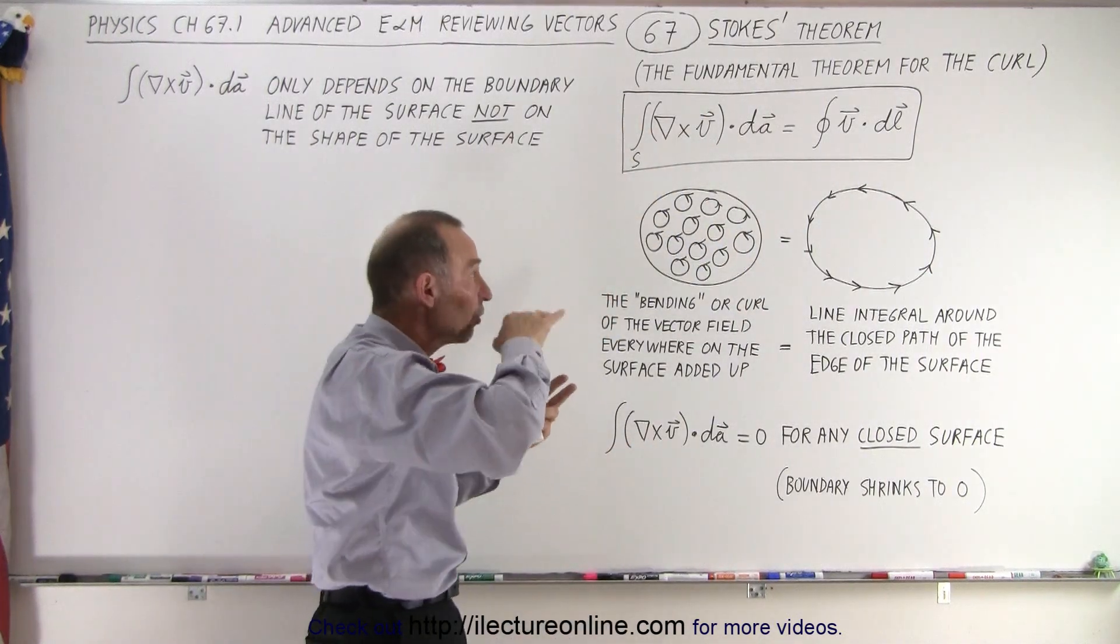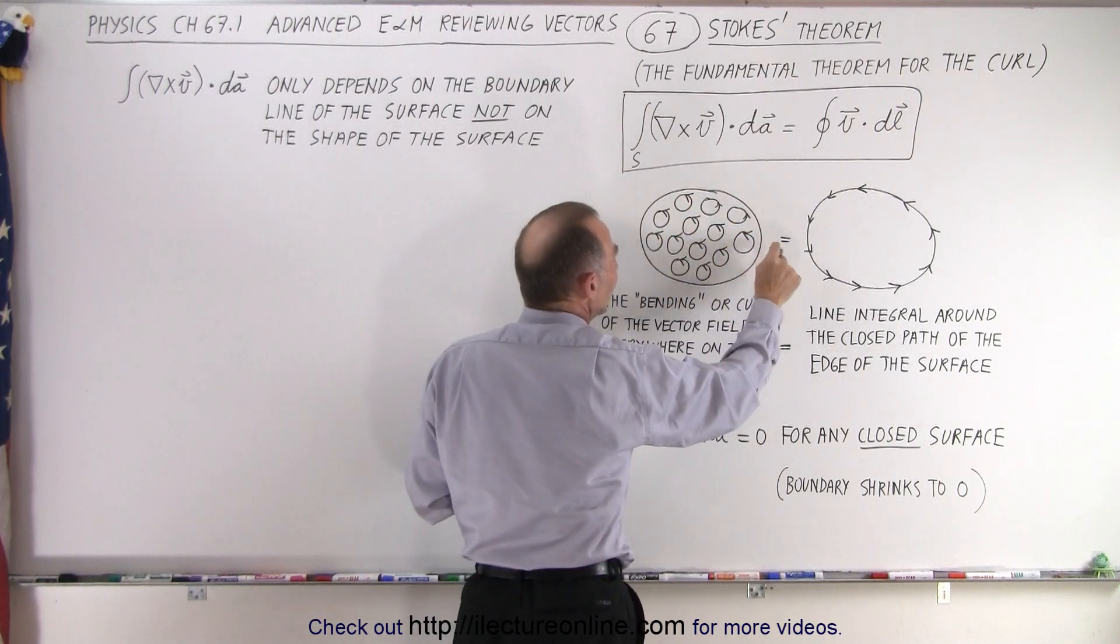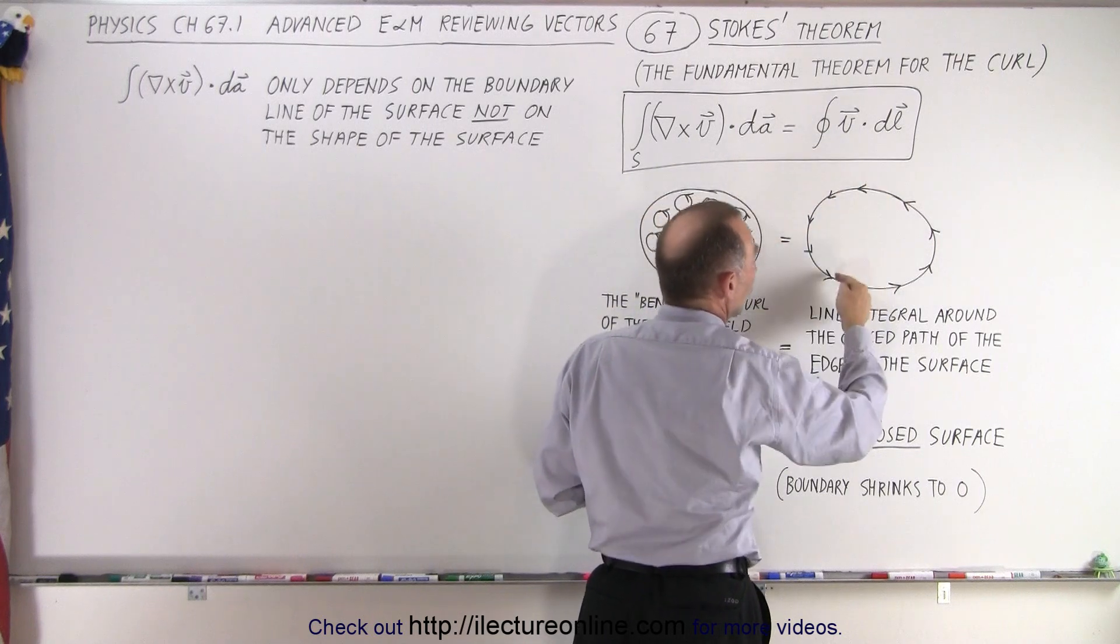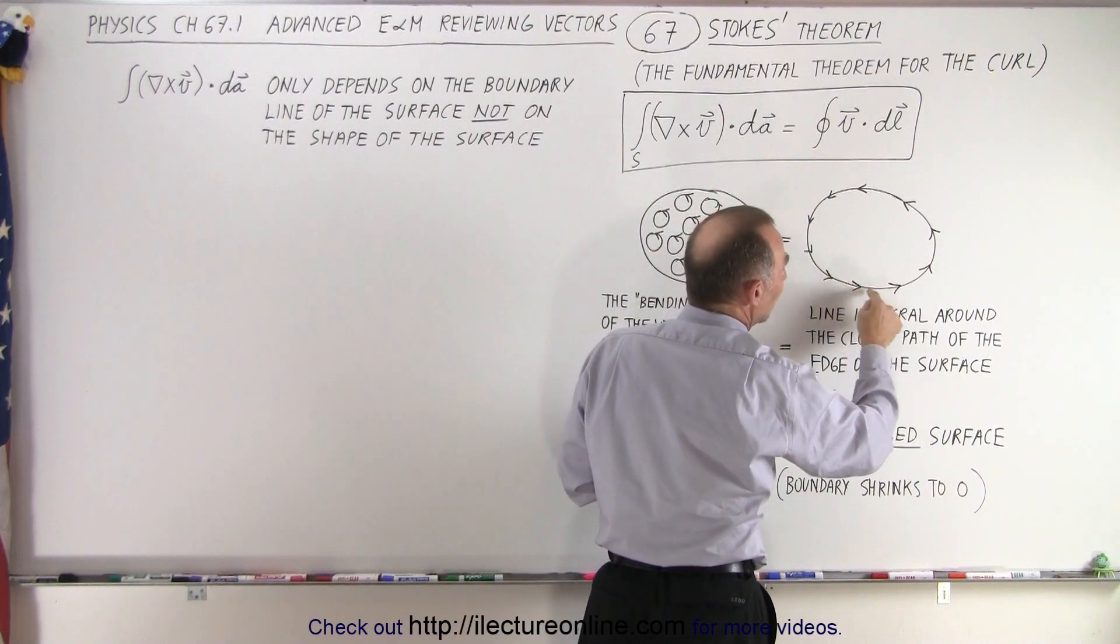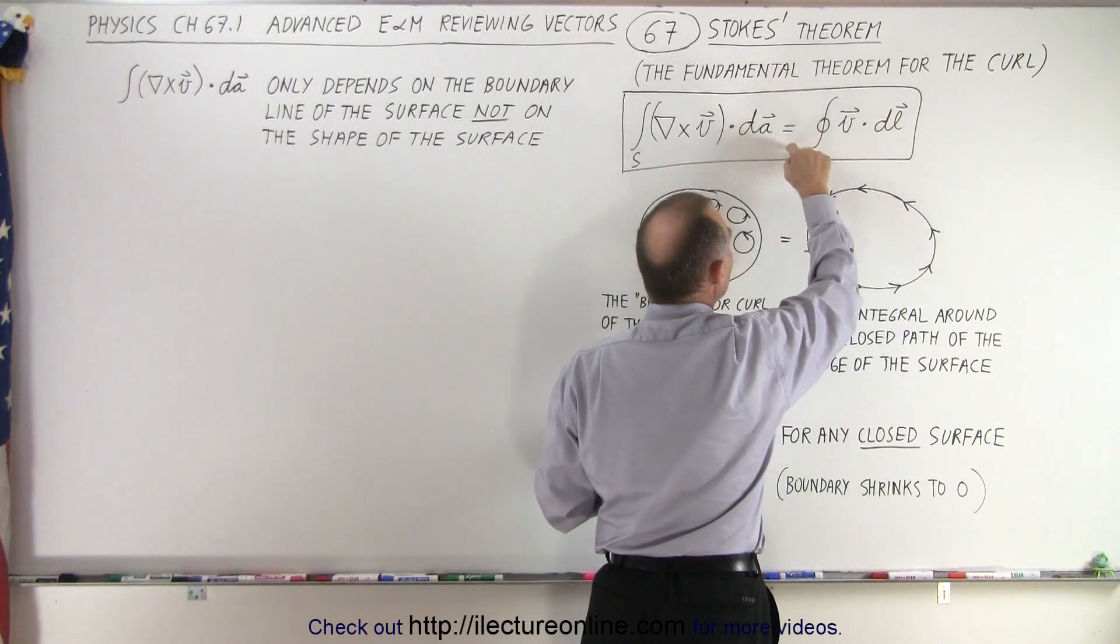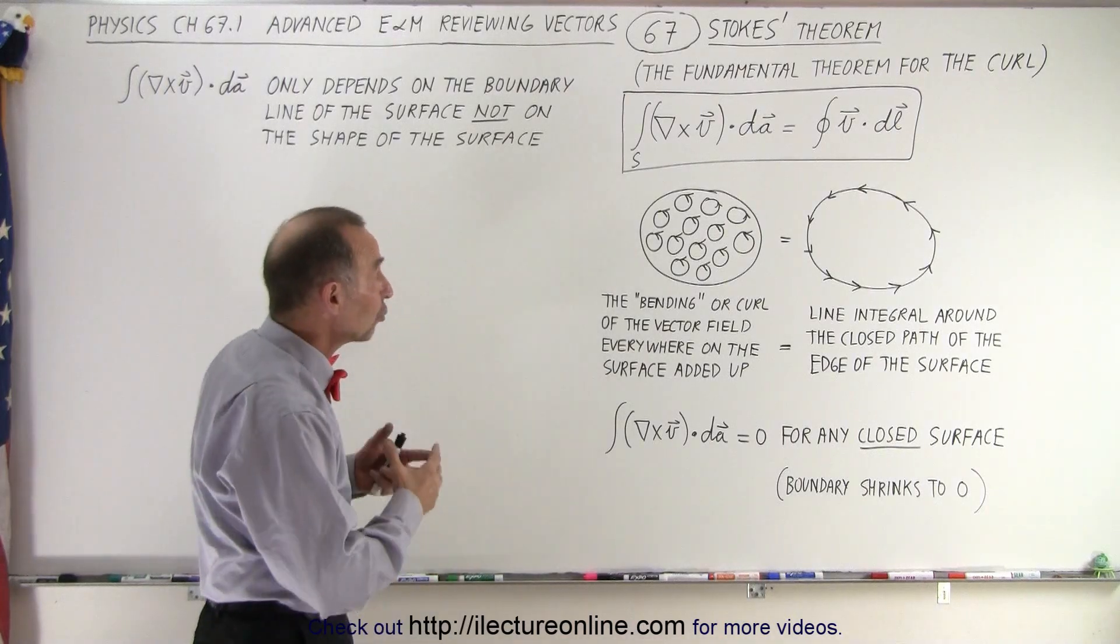It's adding up all these swirls of the vector field anywhere along the surface. And we claim that it is equal to the vector field dot DL. In other words, we take the vector field and we integrate that along the edge of that surface. And the value we get for the right side equals the value we get for the left side. And that is known as Stokes' theorem.